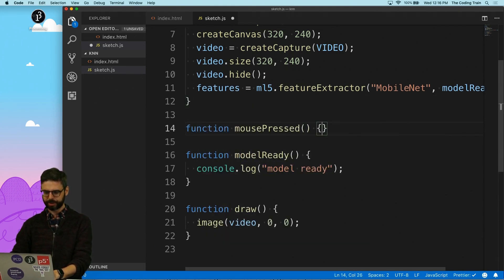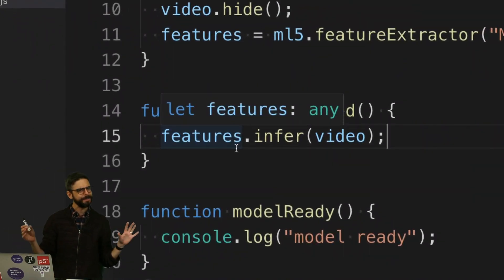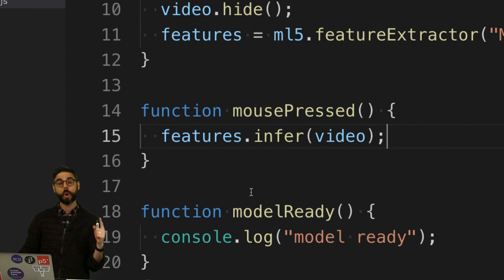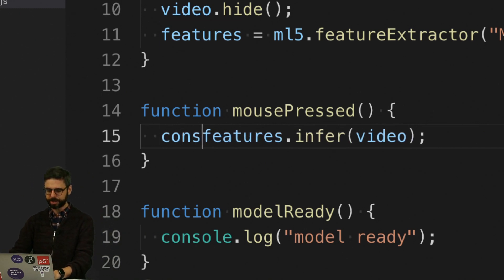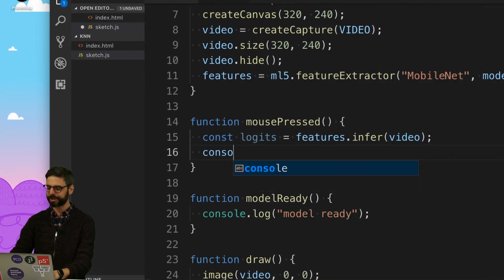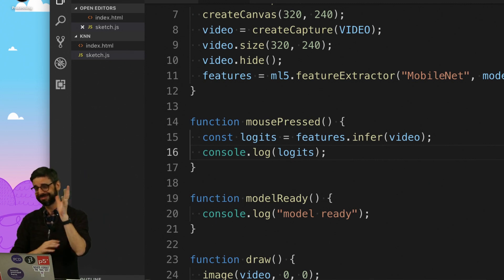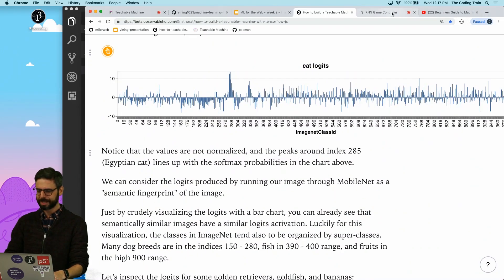In my code, I have the video and I have a feature extractor. The feature extractor is preloaded with the MobileNet model. I'm going to add mouse pressed, and I'm going to say features.infer video. The infer function is the idea of inferring the logits from this particular image. This could be a static image, but since I have the video, it's whatever the snapshot of the video is right now.